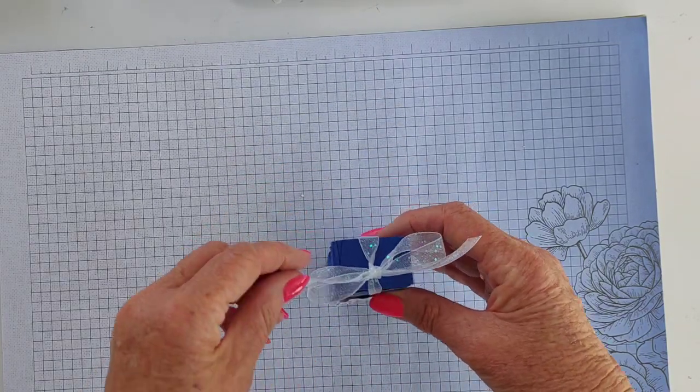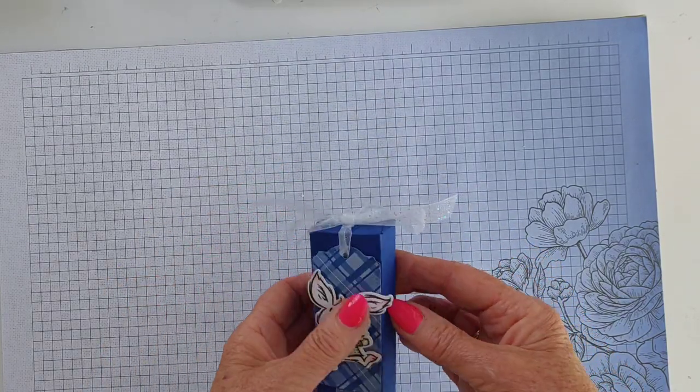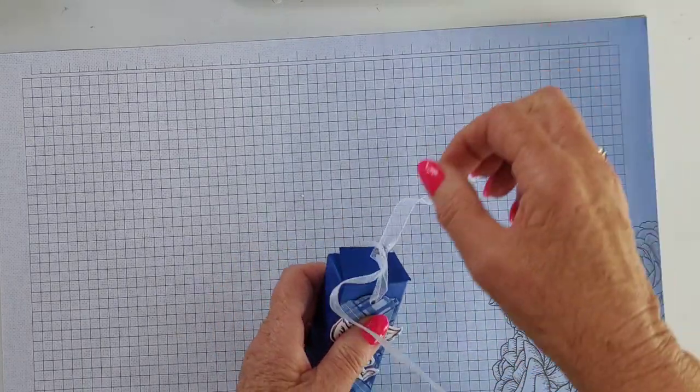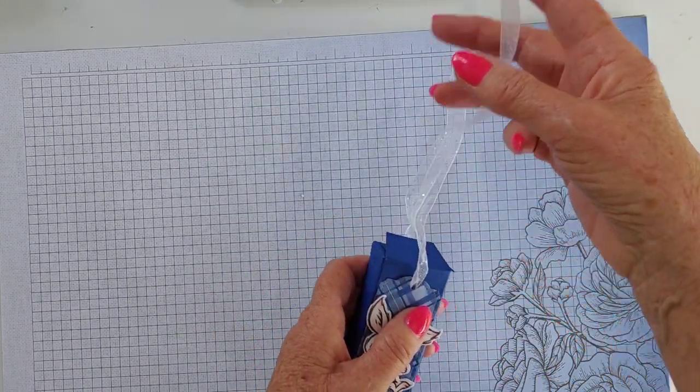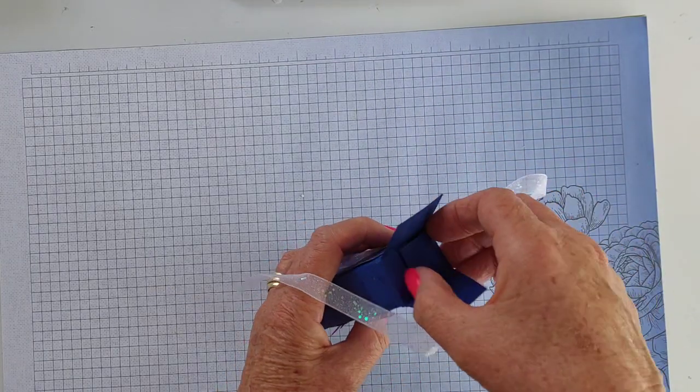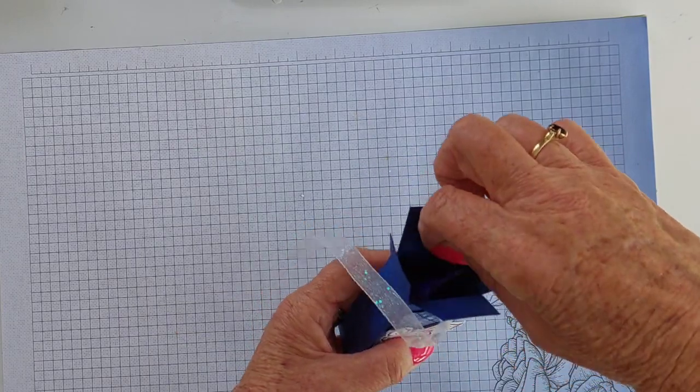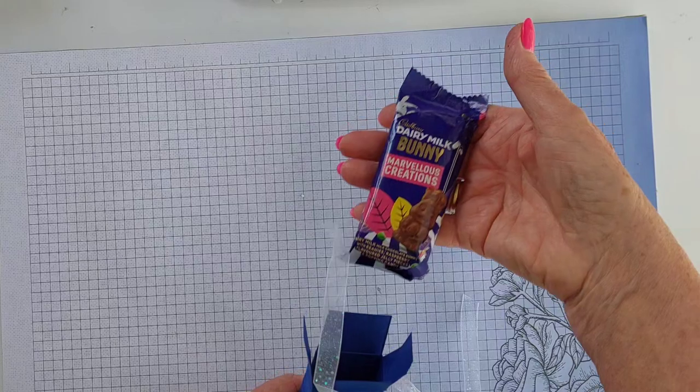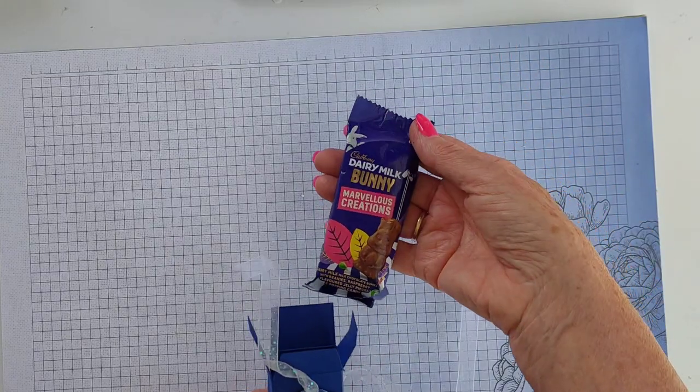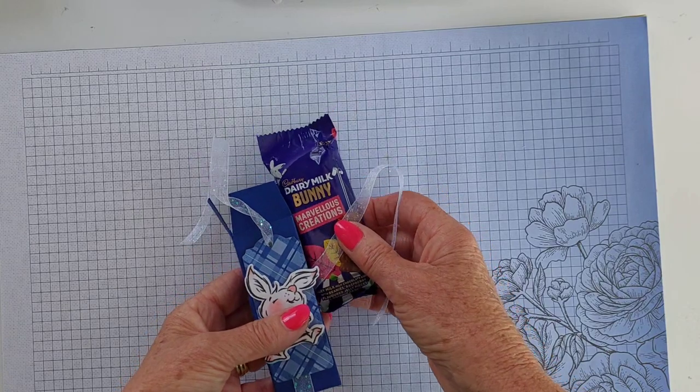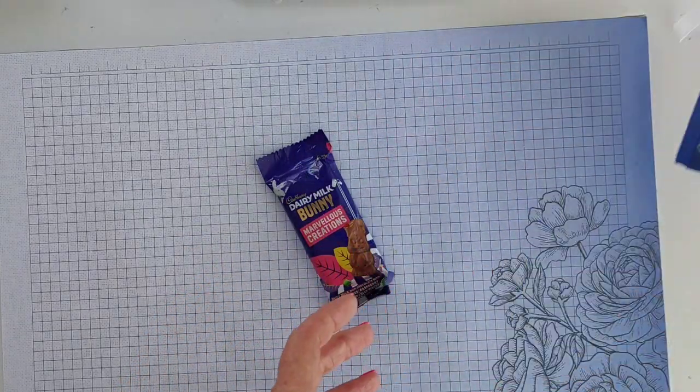Let me open it up first and show you what's inside. I've used Starry Sky cardstock, and the reason I used it is because the treat that's inside coordinates with that color. So it opens up at the top like this, and it is a little Cadbury Marvellous Bunny creation. So I wanted paper that matched, you know, not exactly, but in similar tones.